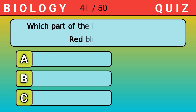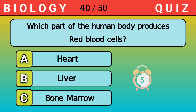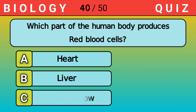Which part of the human body produces red blood cells? Answer C. Bone marrow.